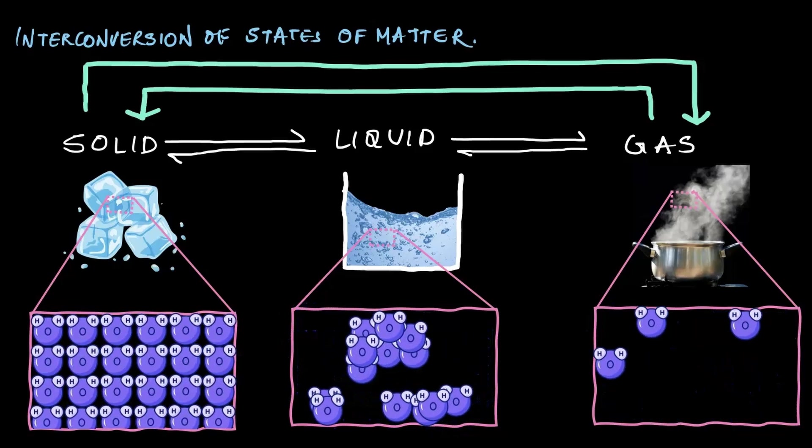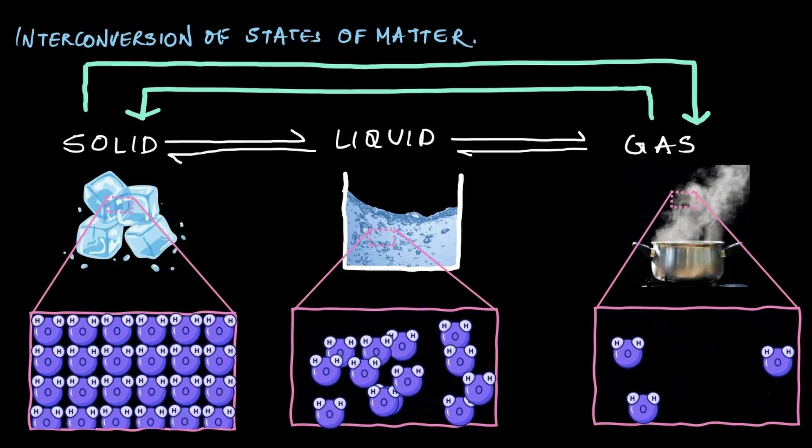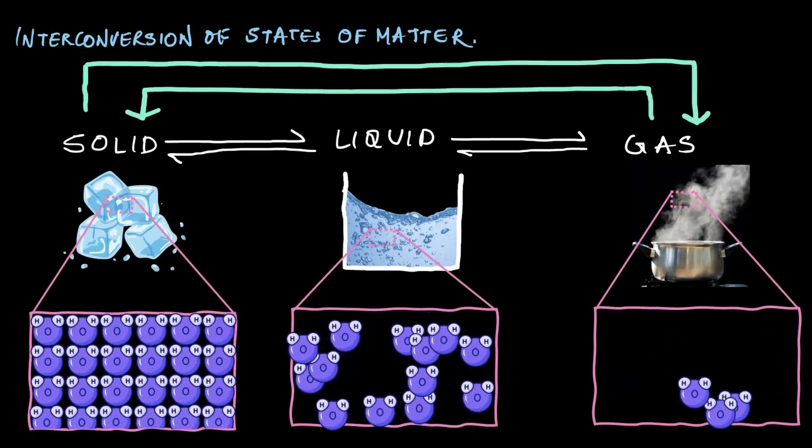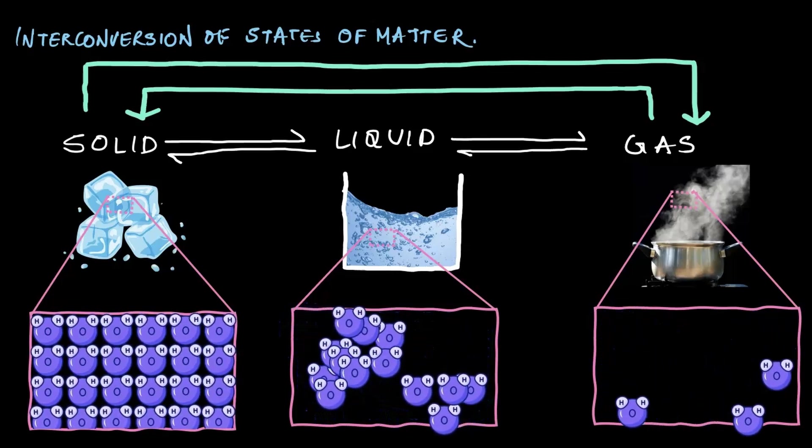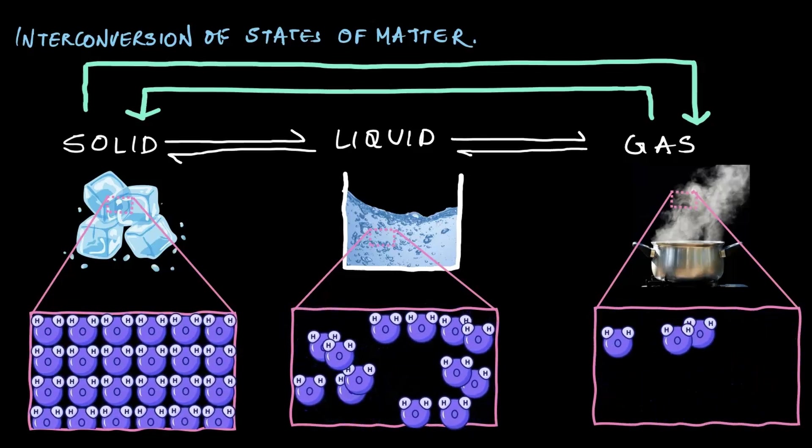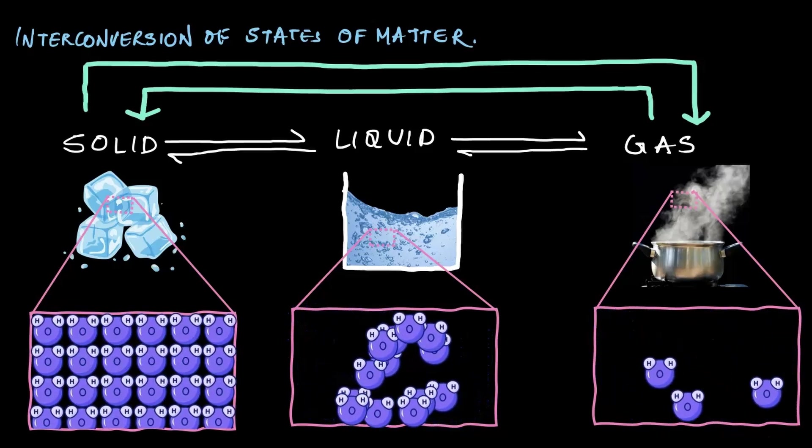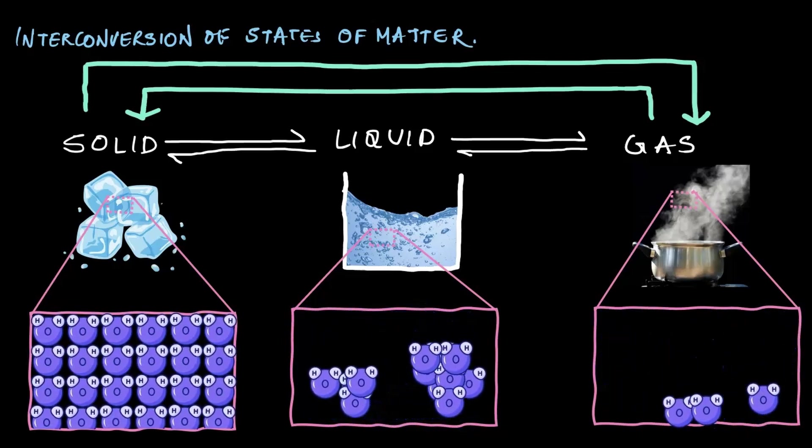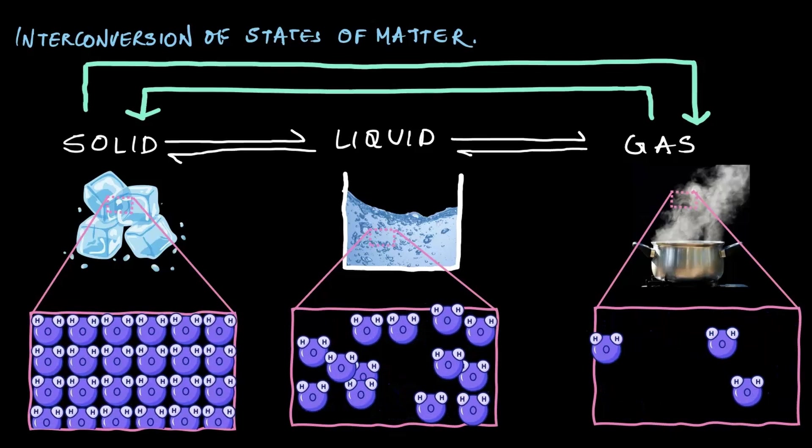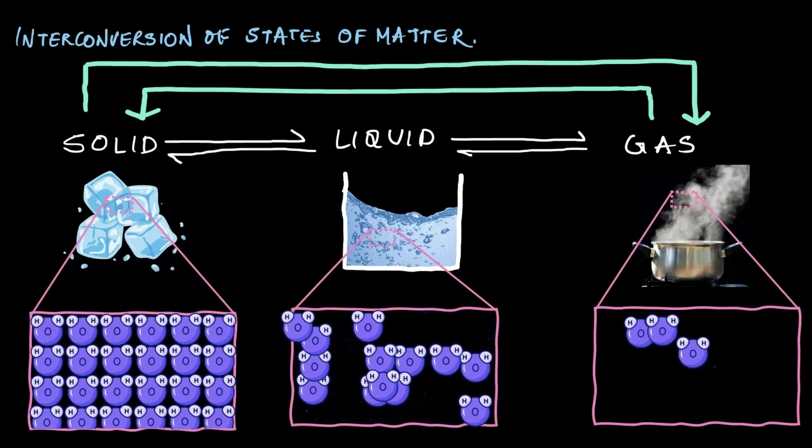And what is the way by which we can change the arrangement of the particles in solid, liquid, and gas? So that if we change the arrangement in solid, it becomes a liquid. If we change the arrangement or how the particles move, it becomes gas. The technique or the way is by giving energy in the form of heat.